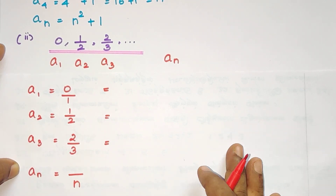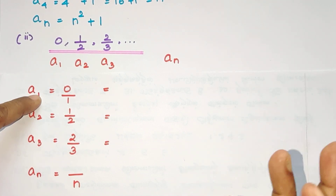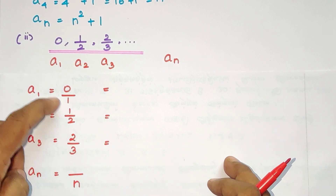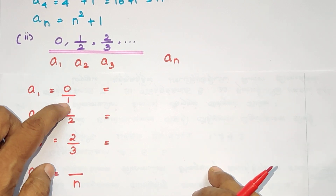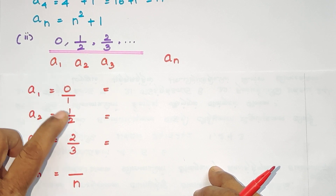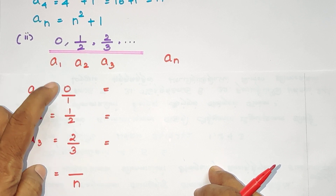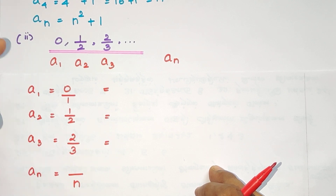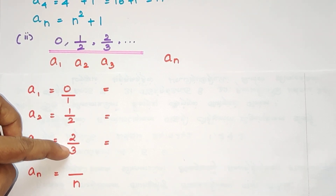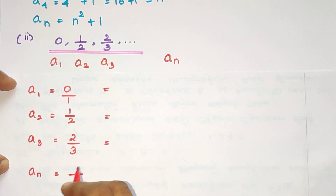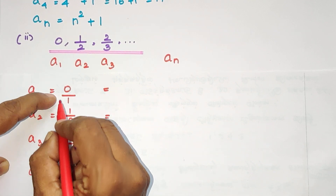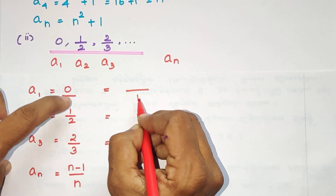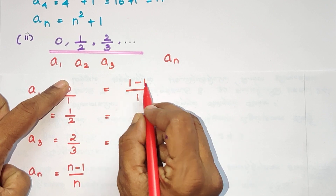Let's look at the numerator first — place the number 0 and then 1. The first term is 1 — 1 minus 1 equals 0. The second term: 2 minus 1 equals 1. The third term: 3 minus 1 equals 2. So the numerator for the nth term is n minus 1. Therefore the general term An = (n-1)/n.